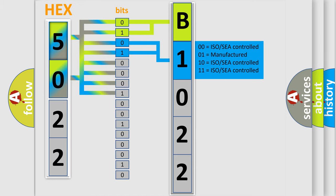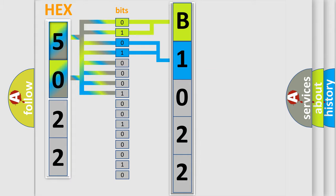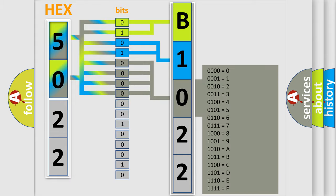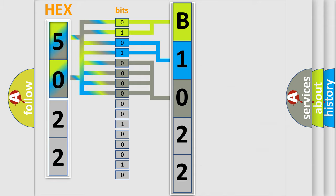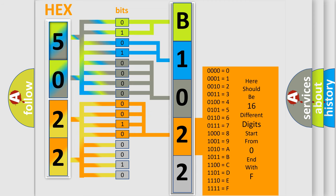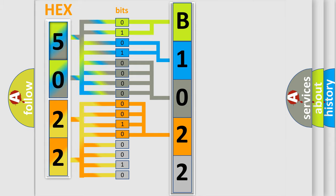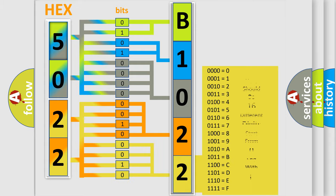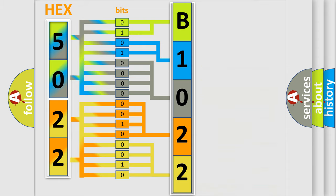The next two bits determine the second character. The last bits of the first byte define the third character of the code. The second byte is composed of a combination of eight bits. The first four bits determine the fourth character of the code, and the combination of the last four bits defines the fifth character. A single byte conceals 256 possible combinations.